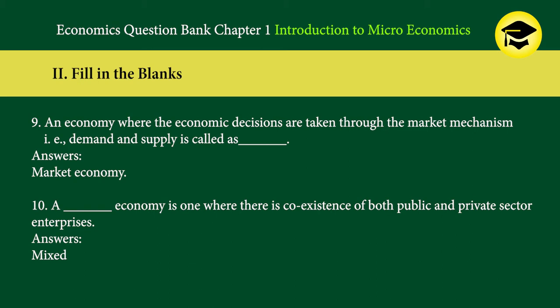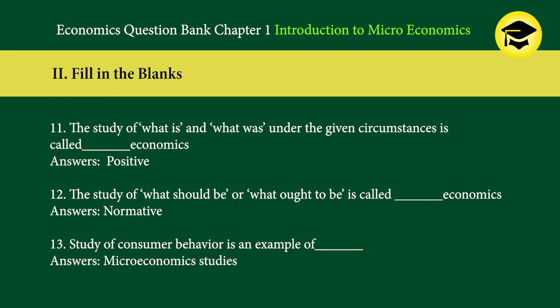8. A mechanism through which scarce resources are prioritized and organized for the production of goods and services with the intervention of government is called as blank — answer: economy. 9. An economy where economic decisions are taken through the market mechanism, i.e., demand and supply, is called as blank — answer: market economy. 10. A blank economy is one where there is coexistence of both public and private sector enterprises — answer: mixed.